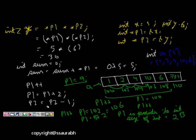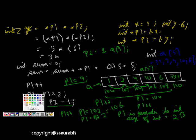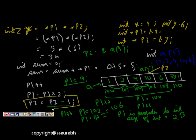Now let's look at pointer subtraction. We have P2 = &A[3]. A[3] is the element at index 3 (0, 1, 2, 3), so P2 points to address 106. If we do P2 = P2 - 1, this is a valid operation. It will move back one integer position, so P2 becomes 104, which is equal to &A[2]. This is pointer arithmetic with subtraction.